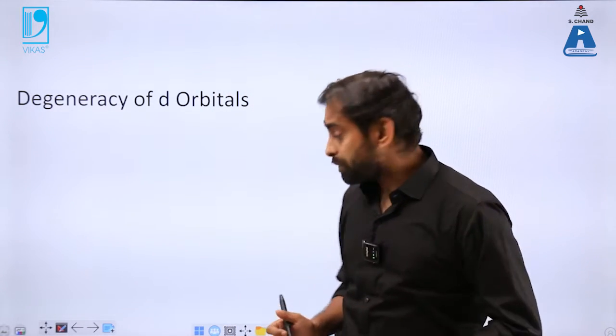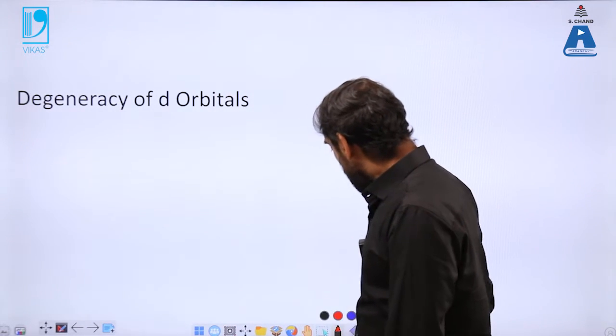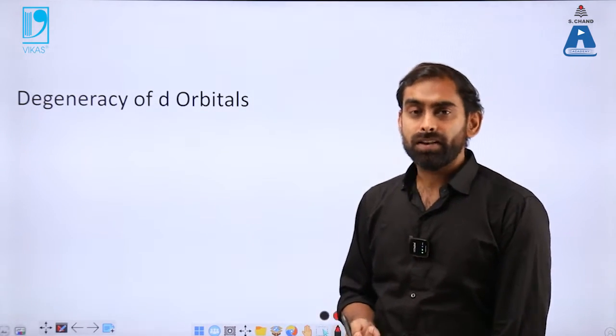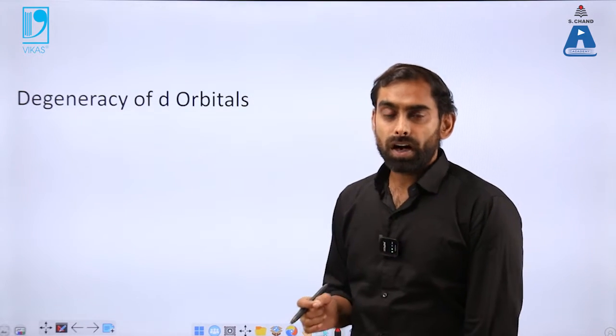In order to understand that, we first have to go back and look at the degeneracy of d orbitals. If you have not seen the previous video already, you can check the video on atomic orbitals and you can see how atomic orbitals were deduced from Schrodinger's equation. As you increase from s to p to d, you will gradually see increase in the number of degeneracy.